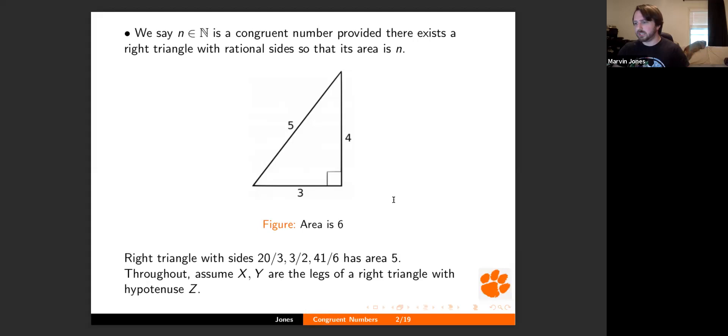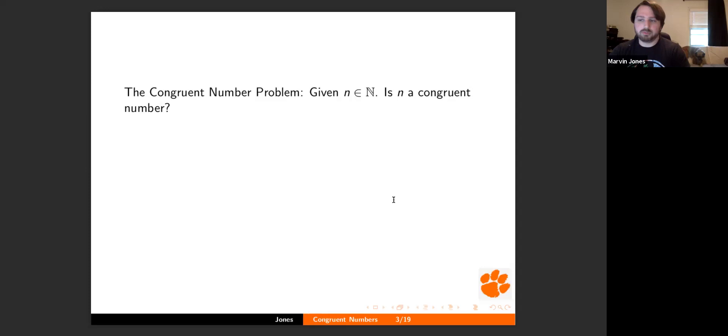Okay. I did not really feel like playing with that number too much. For sanity's sake, which I think is only for one slide, I'm going to assume that capital X and Y are going to be the legs of a right triangle and the hypotenuse is Z. All right.